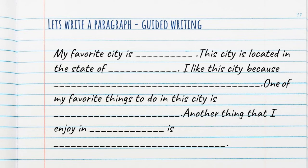For example: 'My favorite city is Jaipur. The city is located in the state of Rajasthan.' Then write: 'I like this city because [first reason].' Then: 'One of my favorite things to do in this city is [something you like to do].' And: 'Another thing I enjoy in [name of city] is [write that].' The final concluding sentence is left to you — write an interesting concluding sentence, not simply 'Jaipur is my favorite city in the world.'